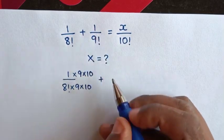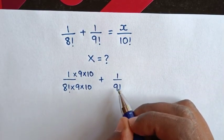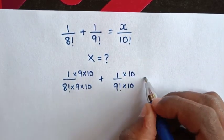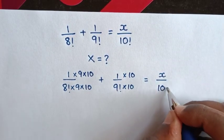Then plus 1 over 9 factorial. To have common 10 factorial, we multiply by 10 and here we multiply by 10. So this is equal to x over 10 factorial.